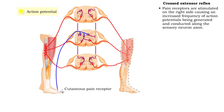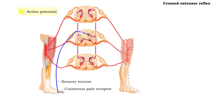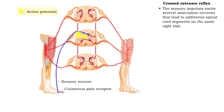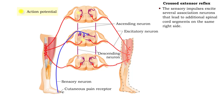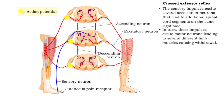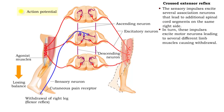Pain receptors are stimulated on the right side, causing an increased frequency of action potentials being generated and conducted along the sensory neuron axon. In the spinal cord, the sensory impulses excite association neurons leading to other segments on the same right side. These association neurons excite motor neurons on the right side that lead to several different limb muscles and cause withdrawal of the foot.